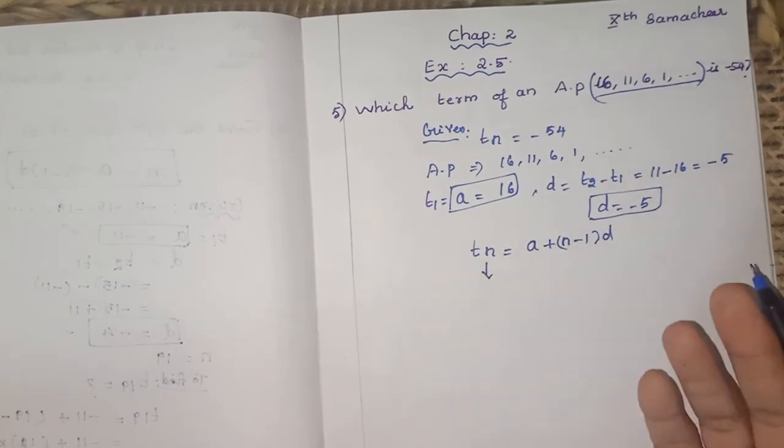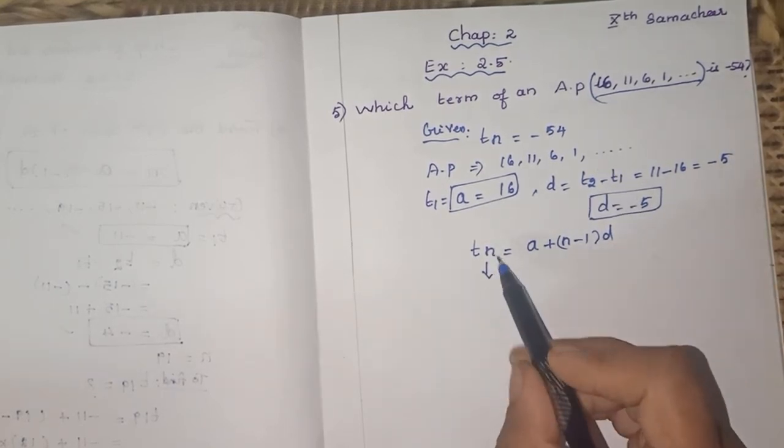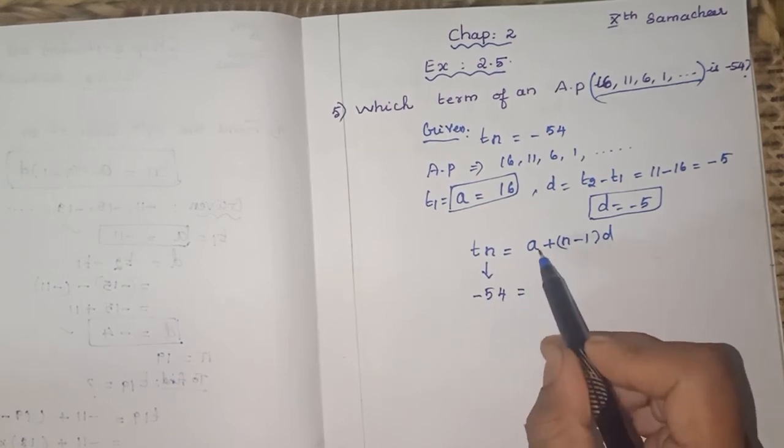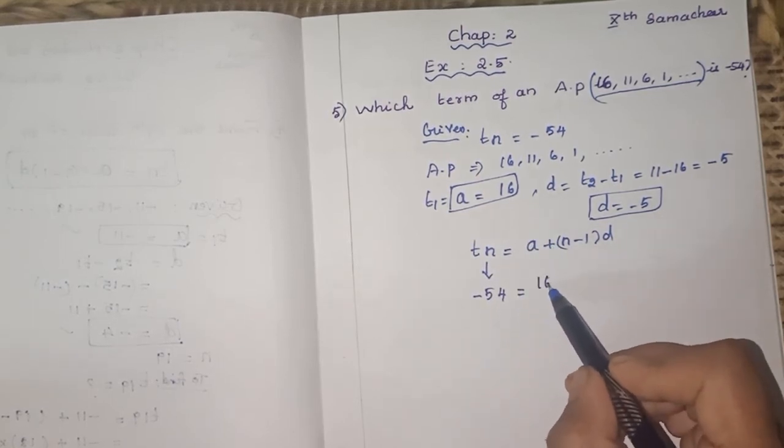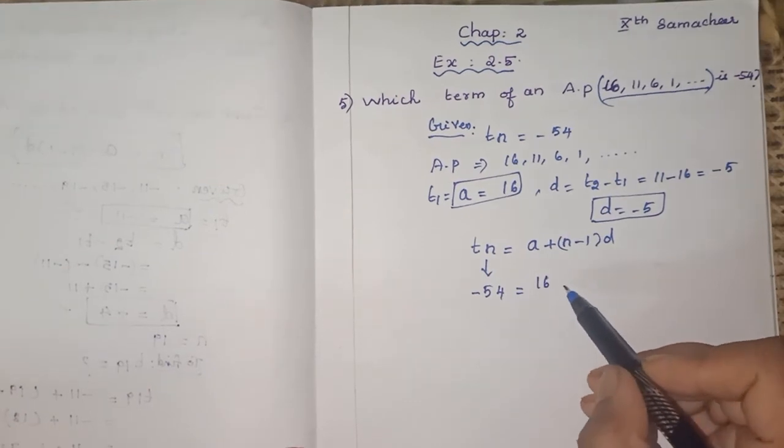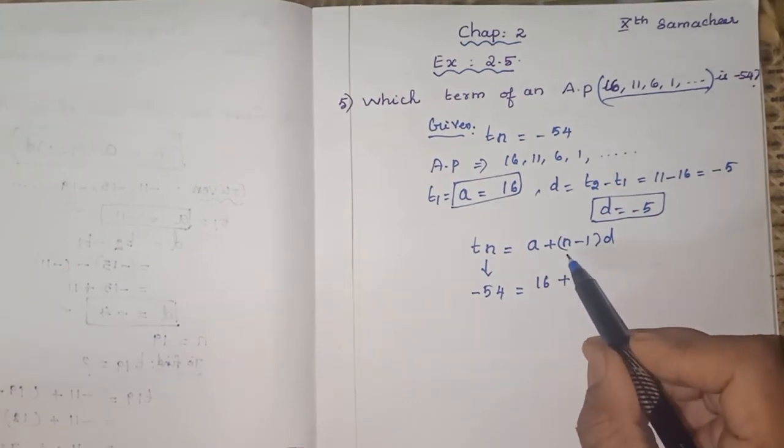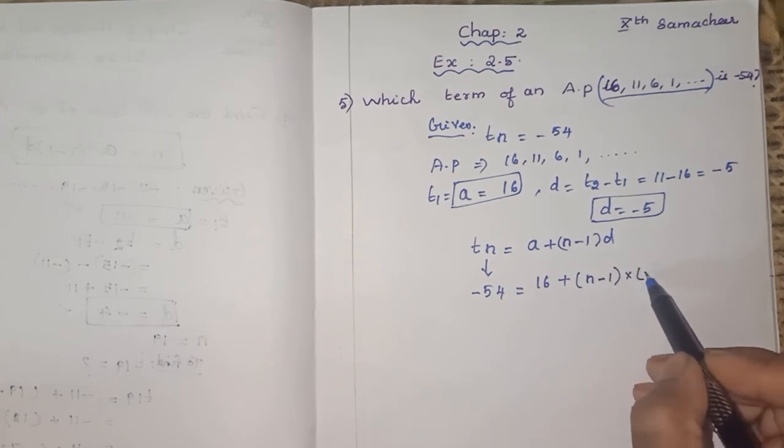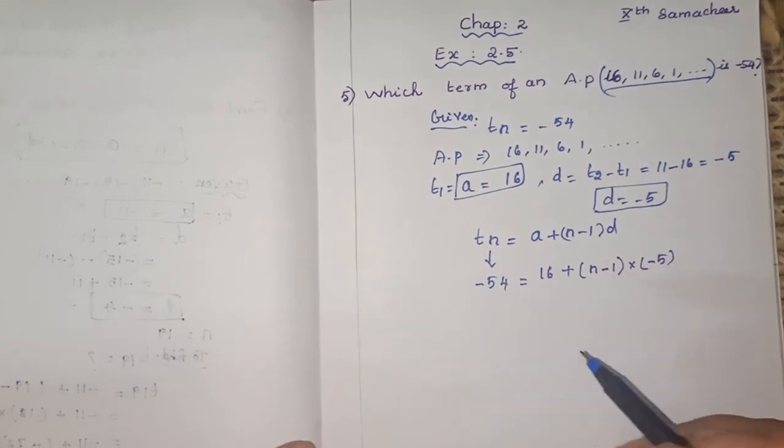So it is given that T_n is what? Minus 54. In the place of T_n you can substitute: minus 54 equals what is our A? 16. 16 is our A plus n, only we should find out. N keep as it is, (n minus 1) into minus 5.